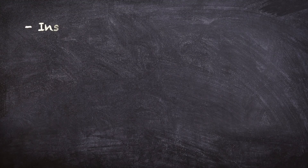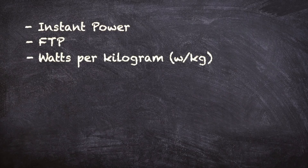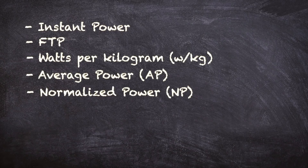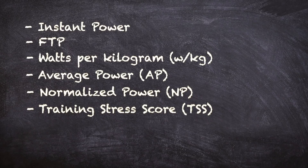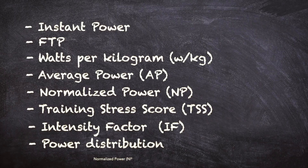Today we want to go beyond just looking at instant power and average power. If you are new to training with power, by the end of this video hopefully you will leave with a much clearer picture and understanding. The metrics we're going to talk about are instant power, FTP, watts per kilogram, average power, normalized power, training stress score, intensity factor, and power distribution. There are plenty of other power metrics but these are the main ones commonly used.